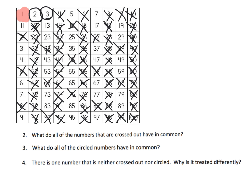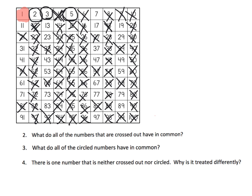We can't circle 4 because it's already been crossed off, so we're going to circle 5. We're going to cross off every multiple of 5. This is actually pretty easy because it's just the whole column ending in 5, and the whole column ending in 0 has already been shaded in. So the 5s was actually pretty easy — there wasn't much to cross off.